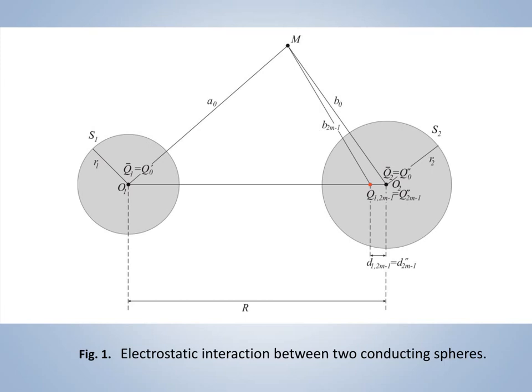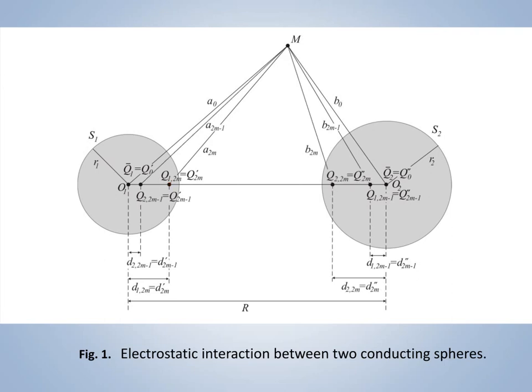Let image charges Q1 to M-1 located in the sphere S2 be formed as a result of Q1. Similarly, let image charges Q1 to M located in the sphere S1 be formed as a result of Q1. Analogically, we can also determine image charges Q2 to M-1 and Q2 to M formed by the charge Q2.